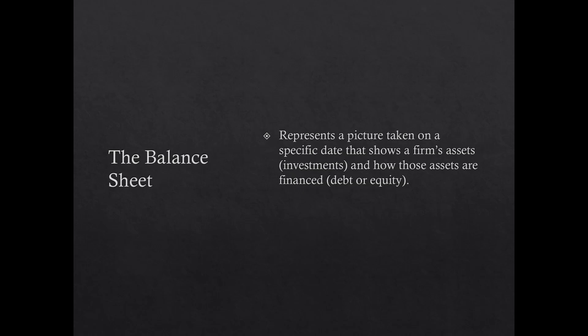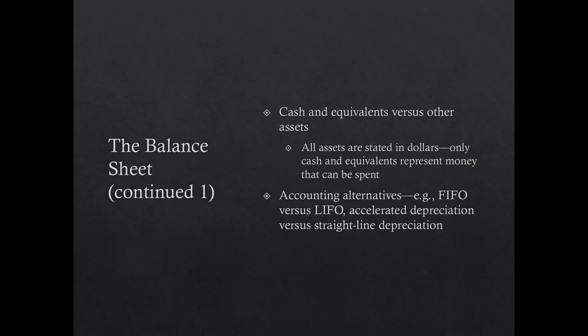The balance sheet is a picture at a specific date — normally the end of the fiscal year, December 31st — that shows what a firm's assets and liabilities are: what the firm owns and how it paid for those things. The balance sheet is organized from the most liquid to the least liquid asset, so liquid means you can turn it into cash easily, with cash at the top.